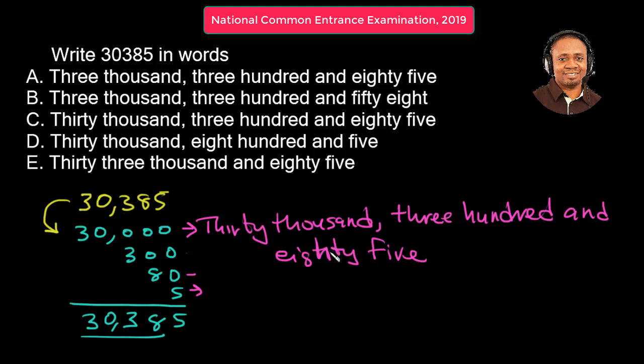So if I look for where to look at the answer option, which one is it? Answer option C, 30,385. So answer option C is the right answer.